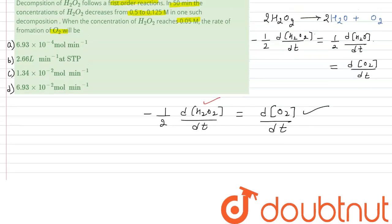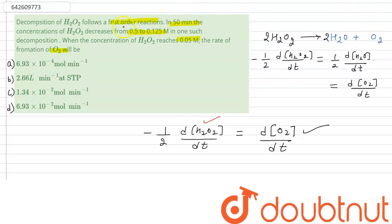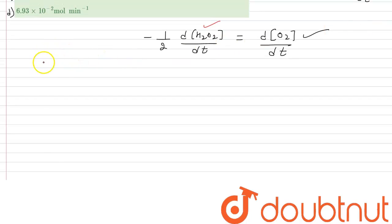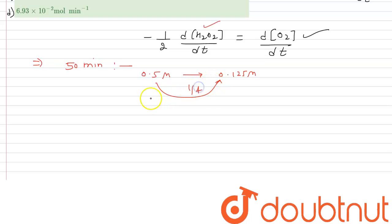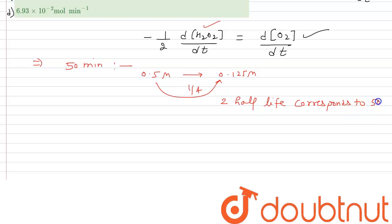In 50 minutes, the concentration of H₂O₂ decreases from 0.5 molar to 0.125 moles — that is one-fourth of the original. This means the concentration became one-fourth in 50 minutes, which corresponds to two half-lives. Therefore, two half-lives correspond to 50 minutes.